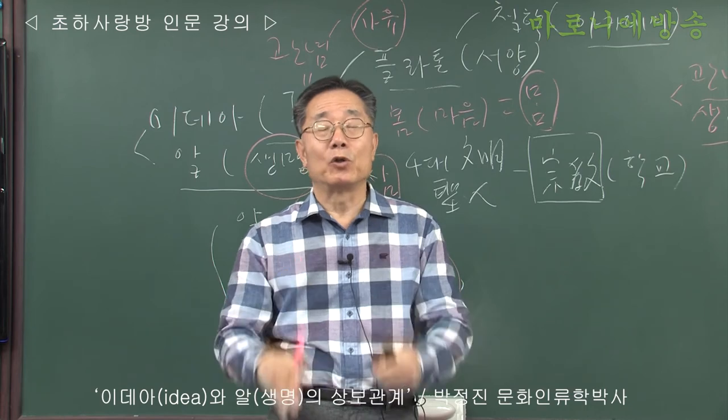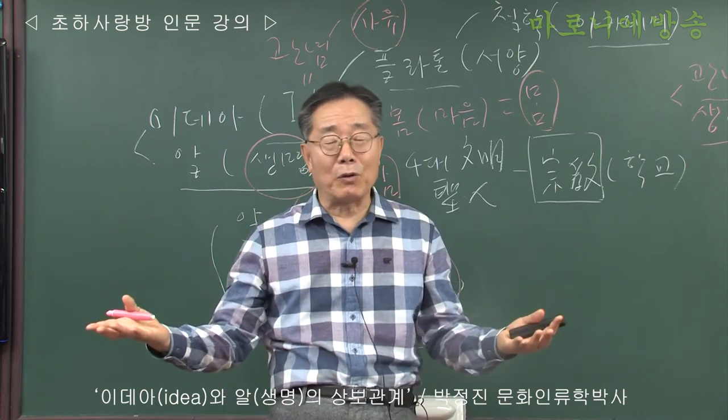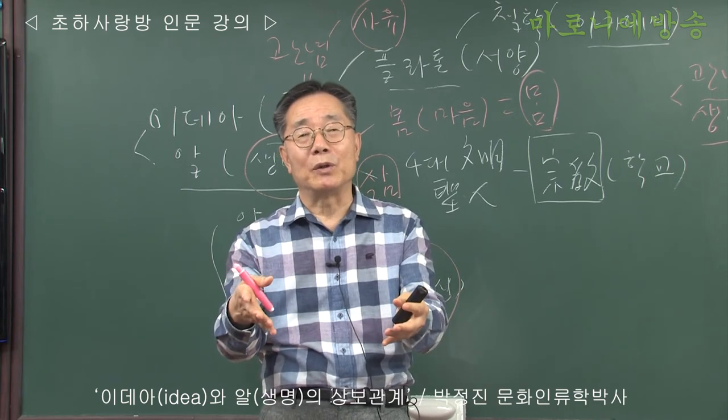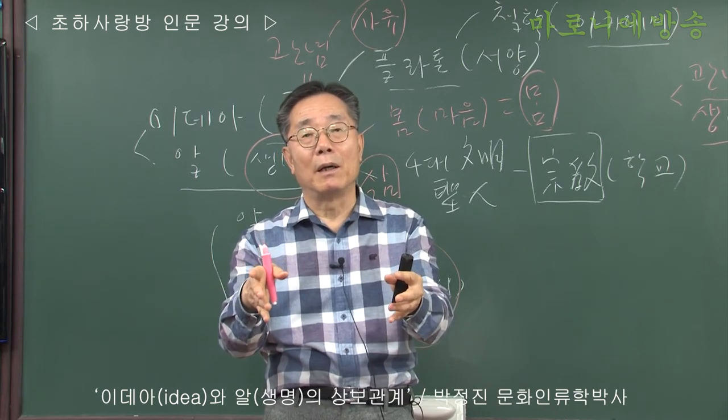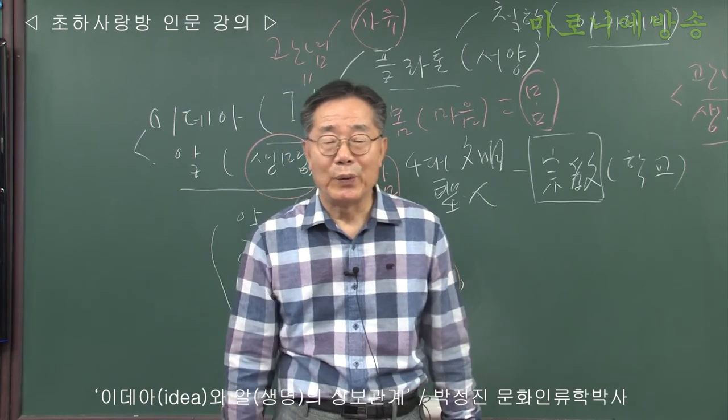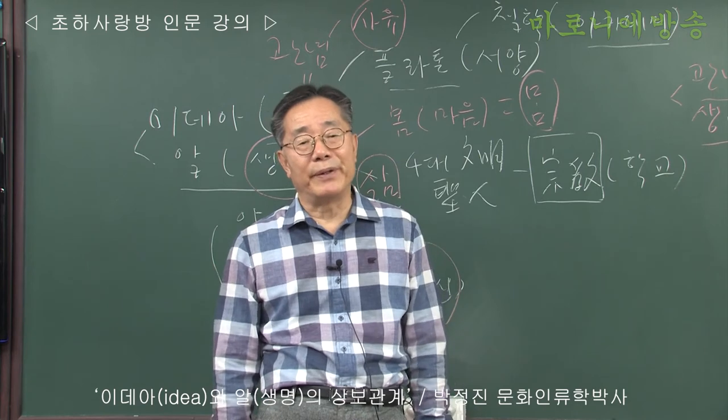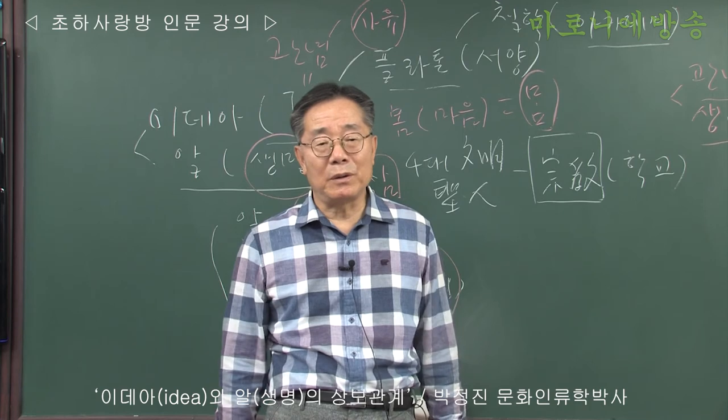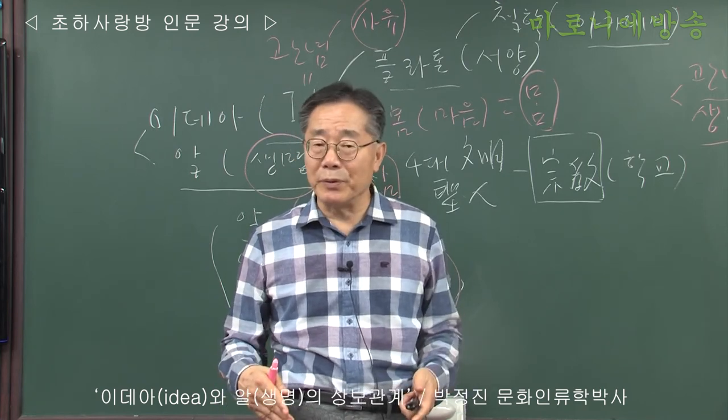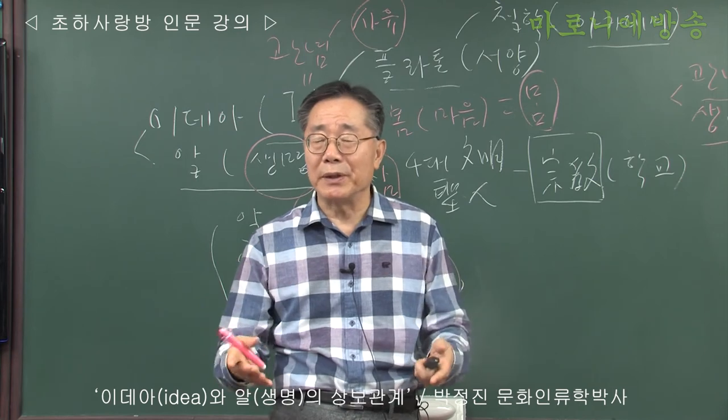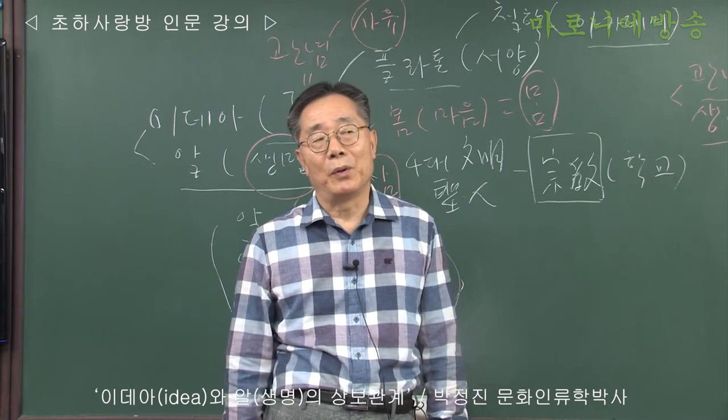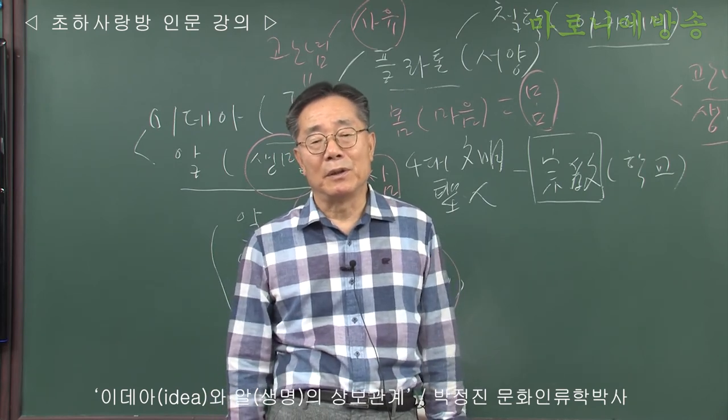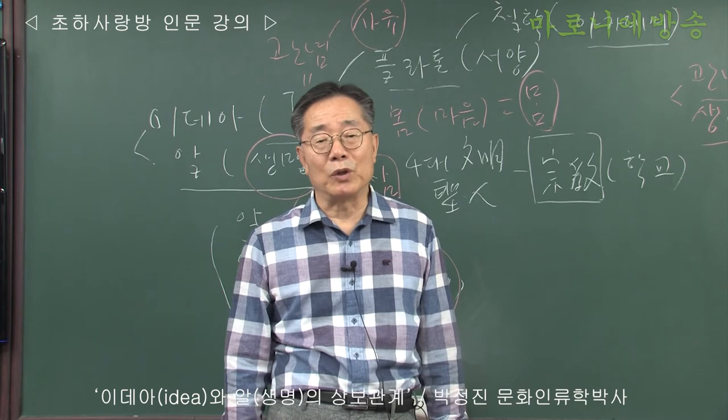노래하고 춤추고 그냥 사는 거야. 그럼 어느 날 갑자기 세계적 문명의 판도가 달라져 가지고 우리 구한말처럼 과학이 요구하는 시대도 그냥 성향만 가지고 있다가 나라 잃어버렸잖아요. 그와 같은 일이 또 되풀이 될 수 있다는 말이에요. 그래서 우리 문화의 특성, 가무적 특성을 존중하면서도 그게 나쁘다 할 필요는 없어요. 우리 특성이니까 우리가 거기로부터 힘을 얻으니까 특성을 존중하면서도 서양이 주도하는 현대문명이나 미래문명에 대해서 적응하기 위해서는 우리 철학을 만드는 노력이 필요합니다.